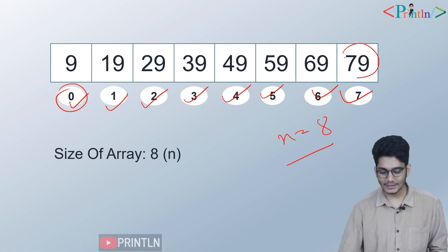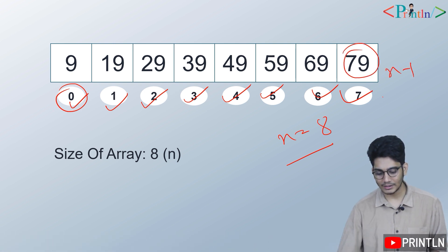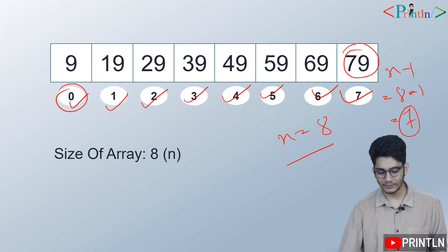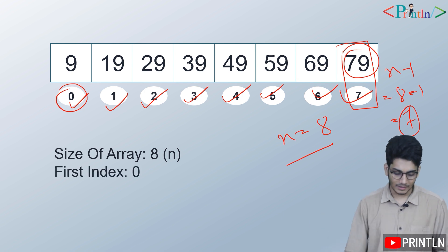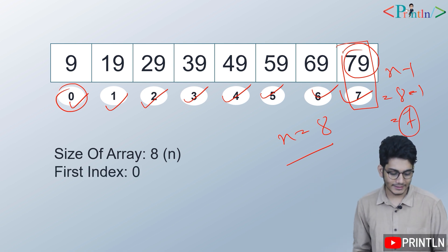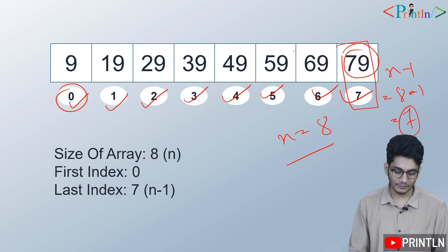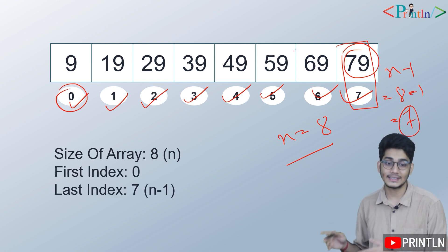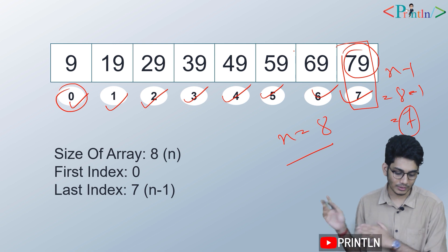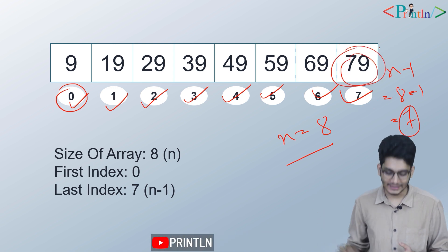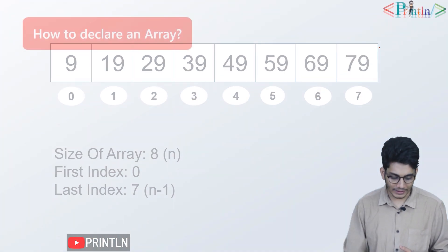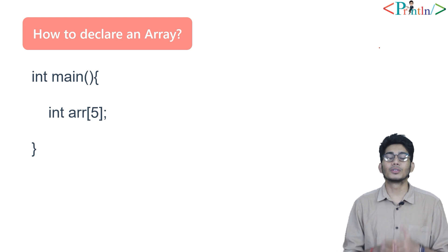The last index of the array will be n minus 1. The value of n here is 8, so n minus 1 equals 7. In the seventh position we have 79. The first index is 0 and the last index is 7. This is the mechanism of array indexing.